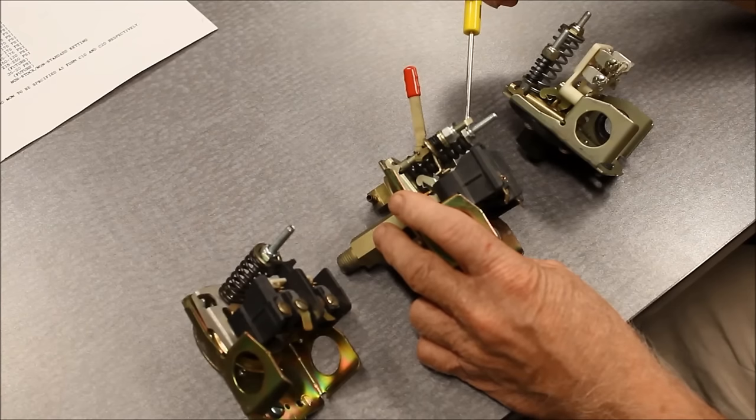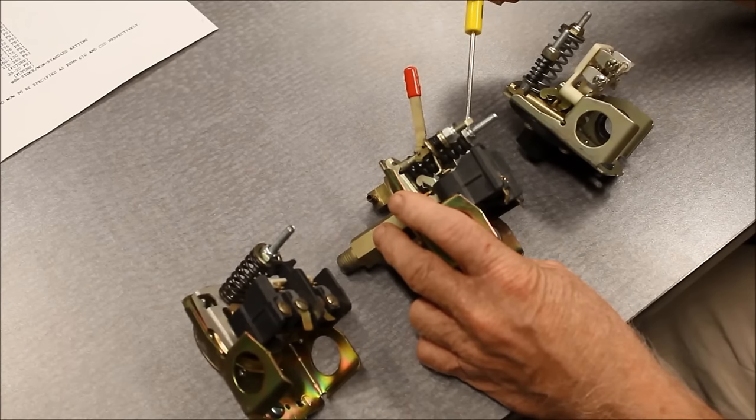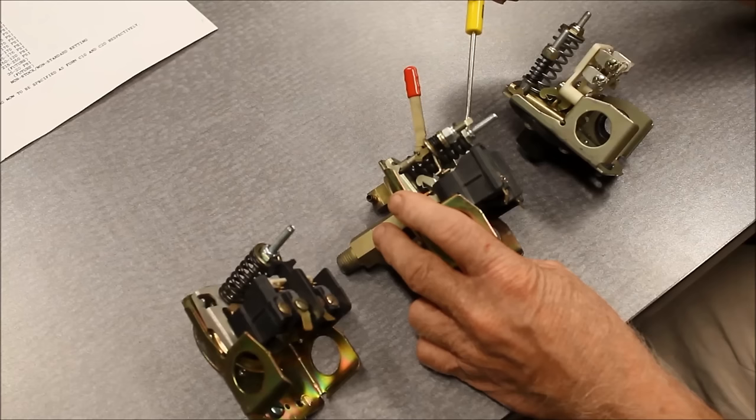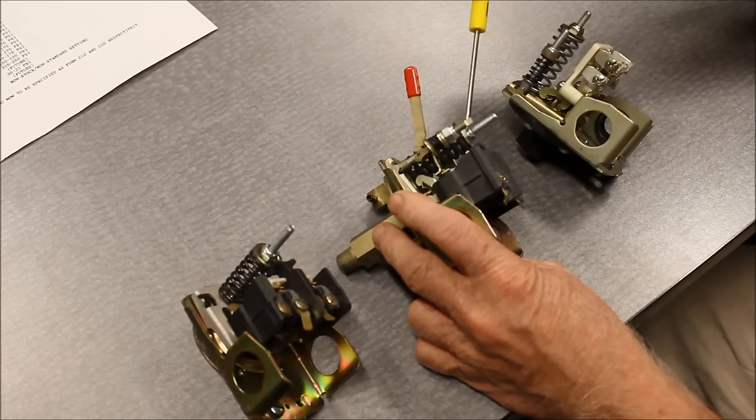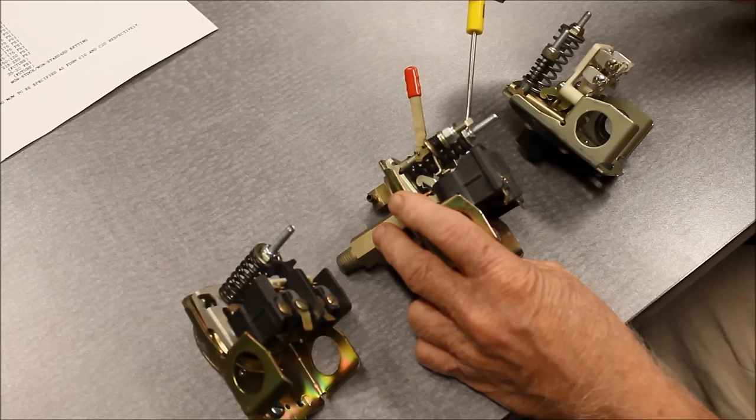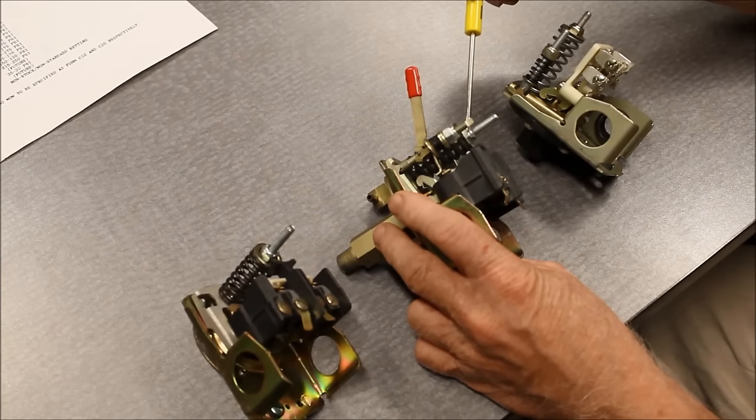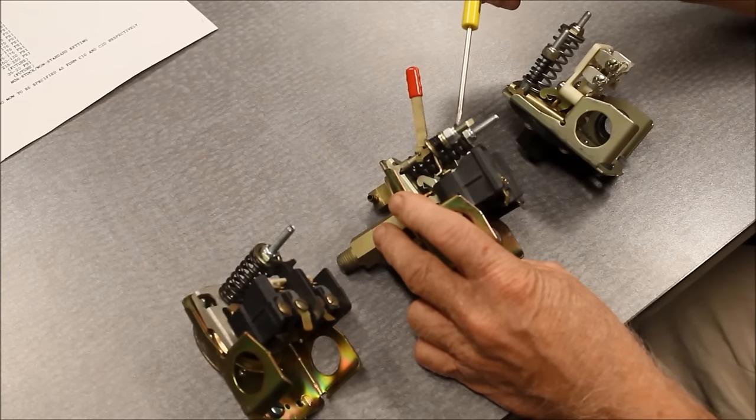Turning the nut on the larger spring three complete turns will adjust the pressure by 10 pounds. Tightening will increase the pressure. Loosening will decrease the pressure. The differential will remain fixed at whatever value that particular device was manufactured to. If it was 20 pounds, it remains 20. If it was 30, it remains 30.